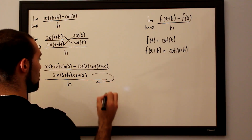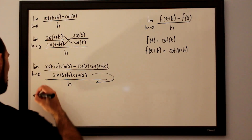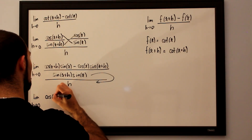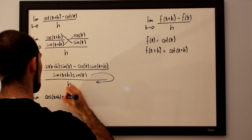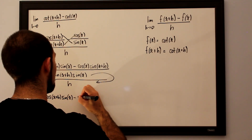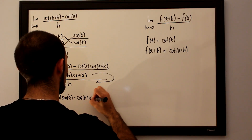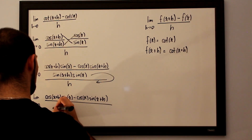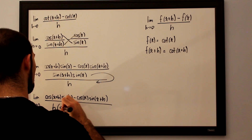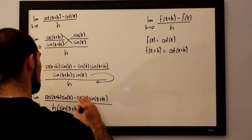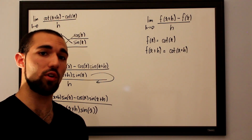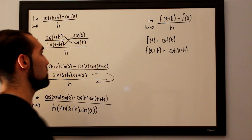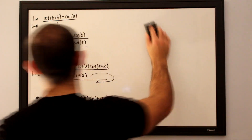Now we can drag the denominator of the numerator into the denominator. We will take the limit as h approaches 0 for cosine of x plus h times sine of x minus cosine of x sine of x plus h, all divided by h multiplied by sine of x plus h times sine of x. What makes this limit so difficult is we will have to make two substitutions: one for the addition of sines and one for the addition of cosines. So let's make some room because we are going to need a lot of it.